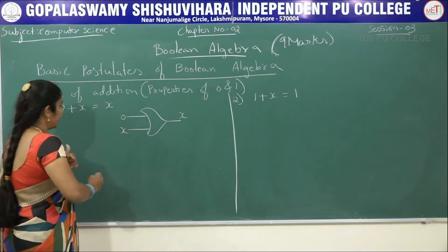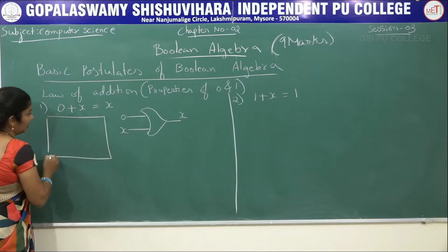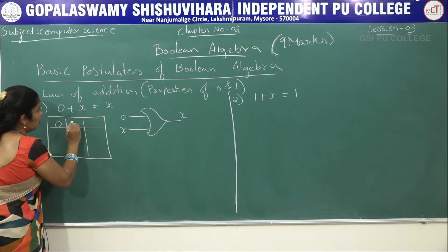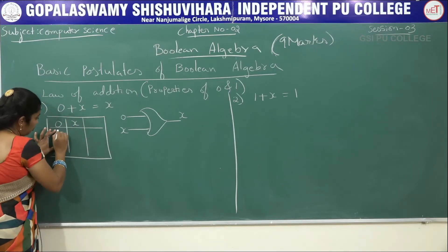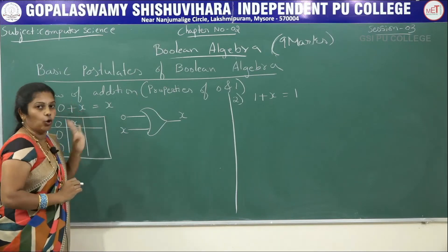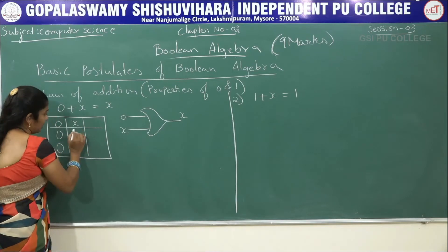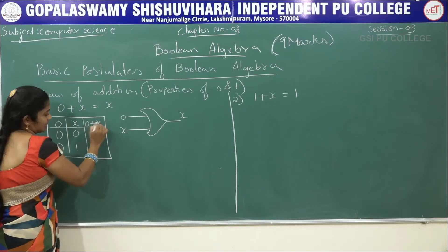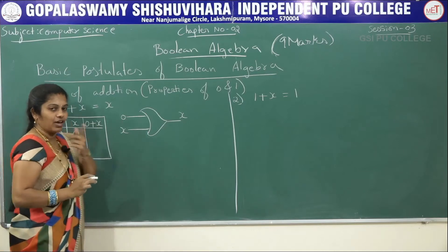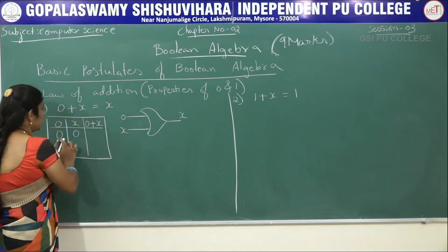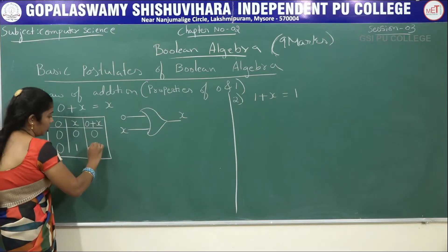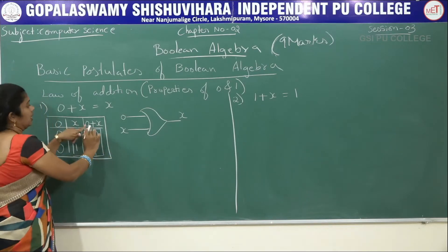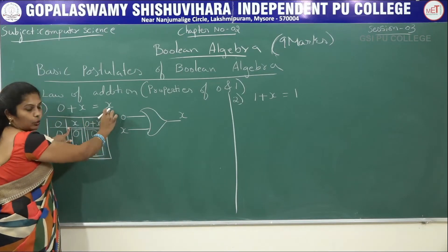Now, how to write the truth table? There is only one variable, x. So we write x with values 0 and 1. The output column is 0 + x: when x=0, 0 + 0 = 0; when x=1, 0 + 1 = 1. With a plus (OR) operator, if any one input is true the output becomes true. So the output column equals the x column, which proves 0 + x = x.